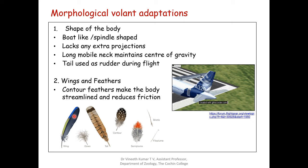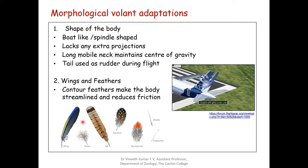The quill feathers seen in the wings are called ramages, and the ones seen in the tail are called rectrices. Both these help in flight. These are the different terms given to these feathers, and these are the feathers which help in flight.